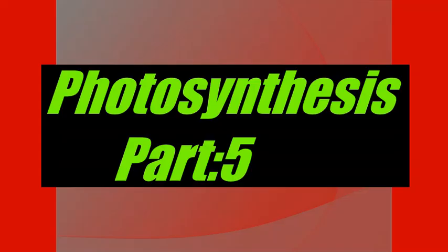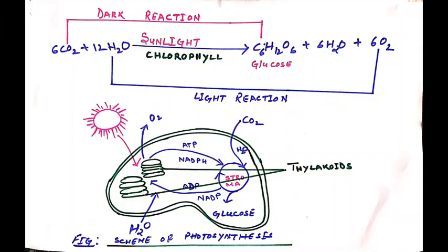It is moving into the state of excitement. It will release the two electrons it has absorbed, which will be absorbed by plastocyanin. Plastocyanin will again release these two electrons, which will be absorbed by photosystem 1.